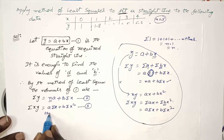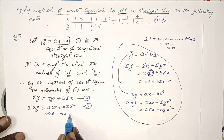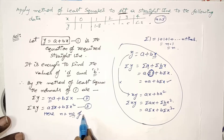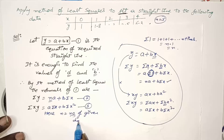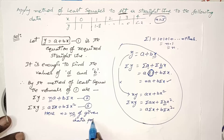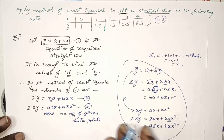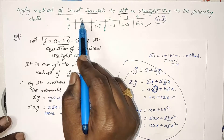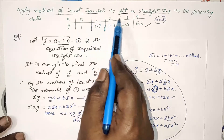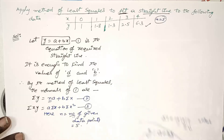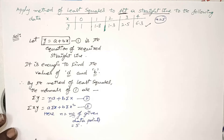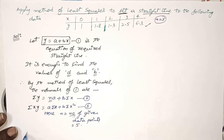Here n equals the number of given data points. In this problem, 5 points are given: 1, 2, 3, 4, 5. So n = 5. Now we have to find out the summations from the given data. I will use a tabular form to get all these values.